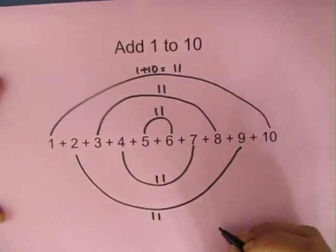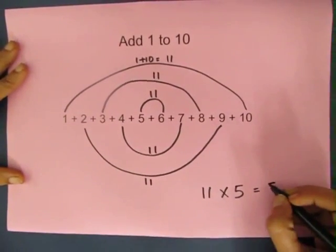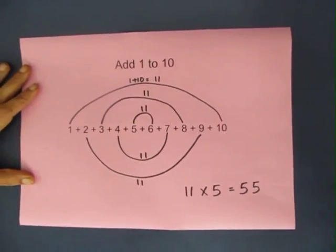So there will be 5 pairs, each with a value of 11. So 5 into 11 would be 55. This is how you add from 1 to 10.